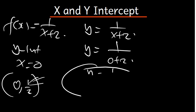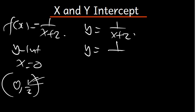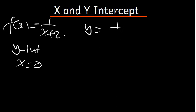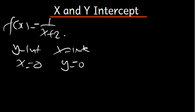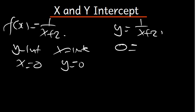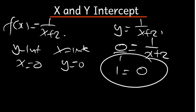What about the x intercept? To find the x intercept, set y equal to 0. So in this case, we're going to say y is equal to 0. The equation is y is equal to 1 over x plus 2. We set y equal to 0, so 0 is equal to 1 over x plus 2. This is the same as 0 over 1. We cross multiply and find that 1 is equal to 0 times everything, which is going to be 0. This doesn't make sense. Therefore, in this case, we don't have the x intercept.